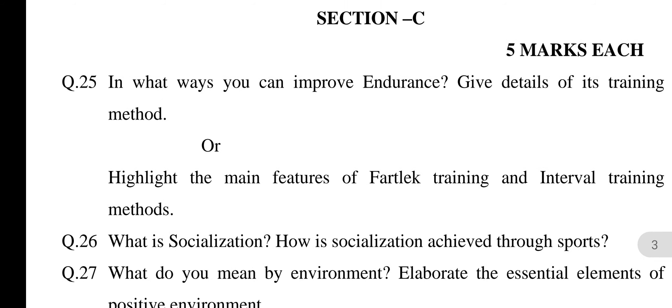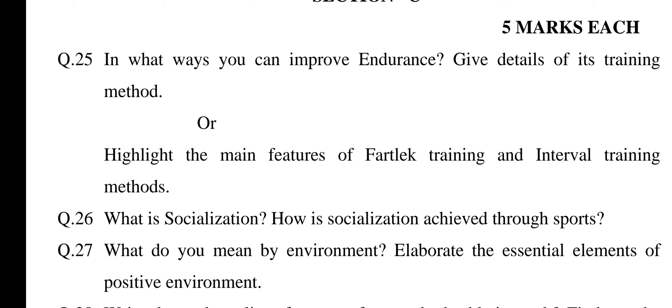Section C — 5 marks each. Question 25: In what ways can you improve endurance? Give details of its training methods. From Chapter 2 — Training Methods. Endurance is one of the most important factors of physical fitness and has an ability to resist against fatigue. There are two types: 1: Short-term endurance or muscular endurance, 2: Long-term endurance or cardiovascular endurance. Training methods for endurance development: 1: Continuous training method, 2: Interval training method, 3: Fartlek training method. Explain all these methods in a few lines.